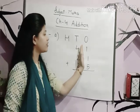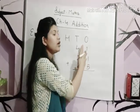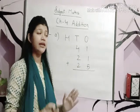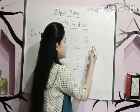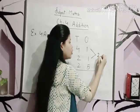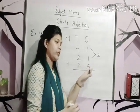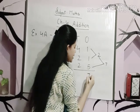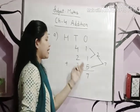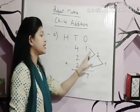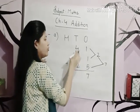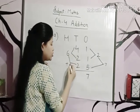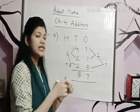First we will add the 1s column. If you face any problem while adding these 3 digits together, then first add the first two numbers: 1 plus 1 is equal to 2. Now add this result with the next number: 2 plus 5 is equal to 7, so the answer is 7. Now after solving the 1s column, let's come to the 10s column. 4 plus 2 is equal to 6, then 6 plus 2 is equal to 8. So we write 8 here. The answer we got is 87.